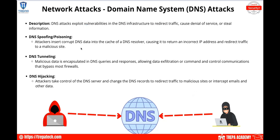Now let's go over the different types of DNS attacks. DNS spoofing is where attackers insert corrupt DNS data into the cache of a DNS resolver, causing it to return an incorrect IP address and redirect traffic to a malicious site. DNS tunneling is where malicious data is encapsulated in DNS queries and responses, allowing data exfiltration or command and control communications — hidden inside DNS packets so firewalls don't flag it. DNS hijacking is where attackers take control of a DNS server and change records to redirect traffic to malicious sites or intercept emails.